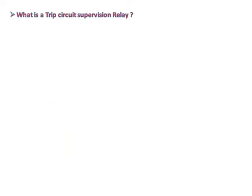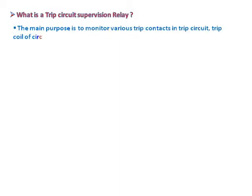What is a Trip Circuit Supervision Relay? The main purpose is to monitor various trip contacts in the trip circuit and trip coil of the circuit breaker, and sends an alarm in case of any failure in the trip circuit.